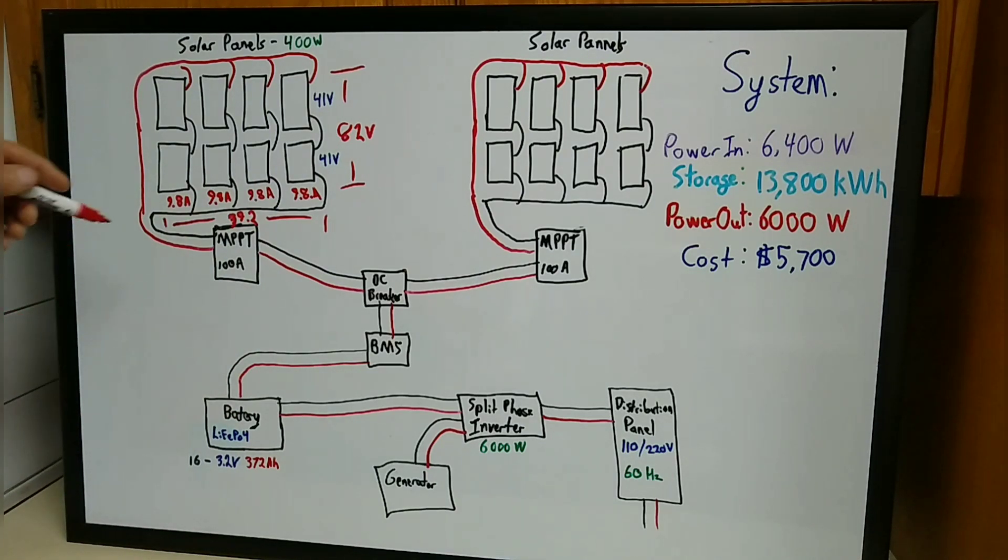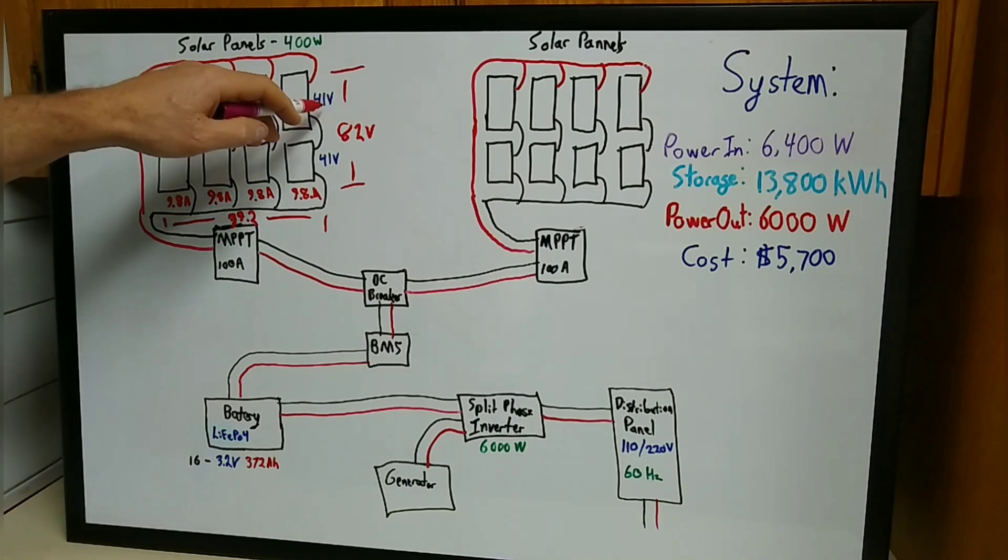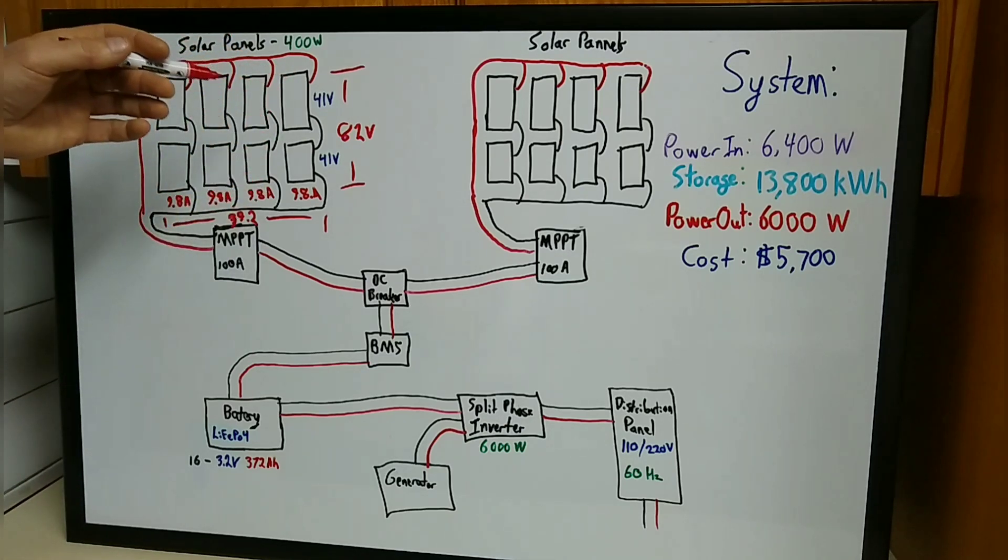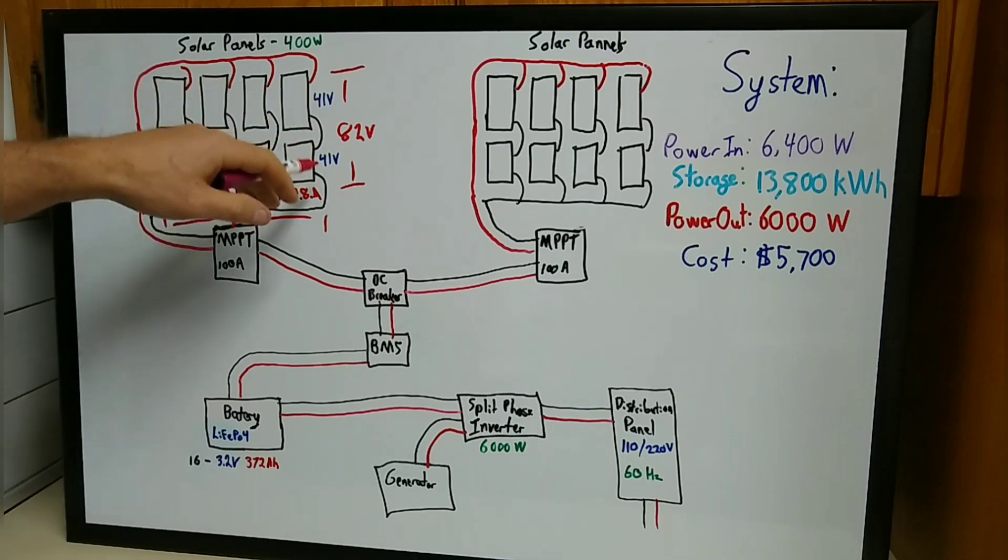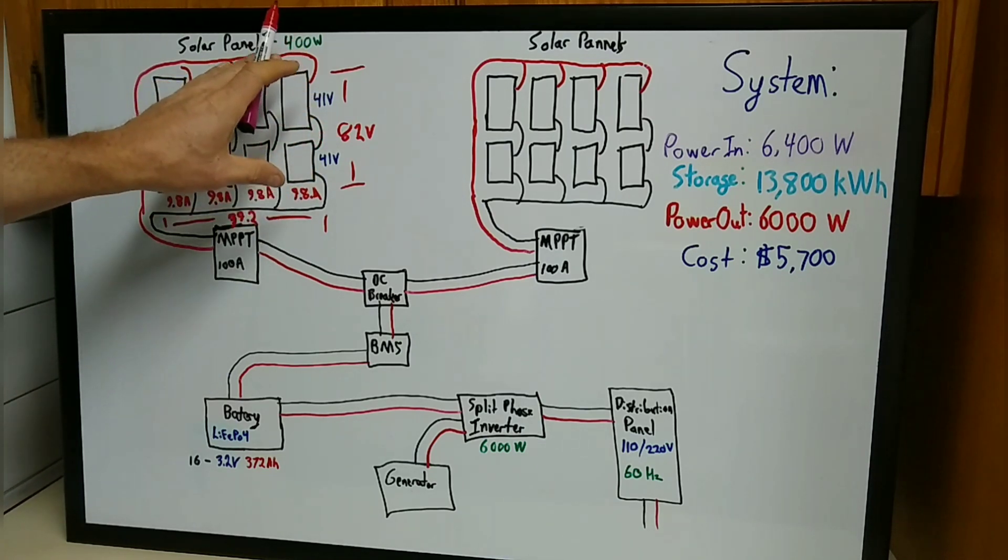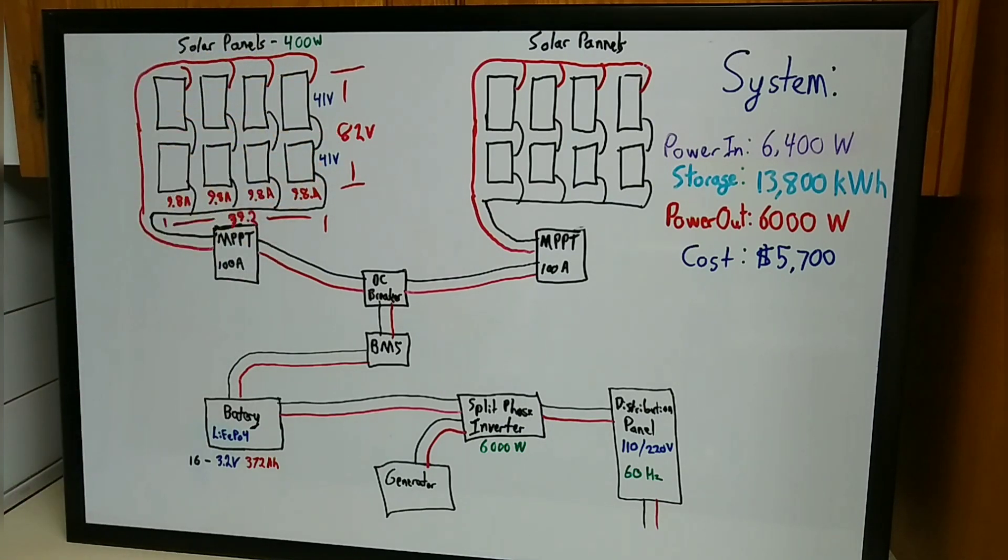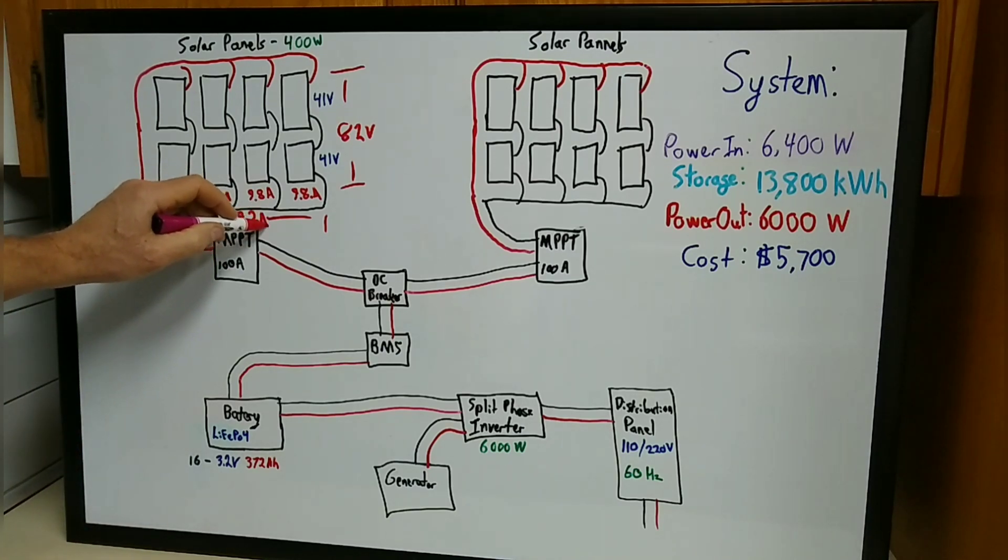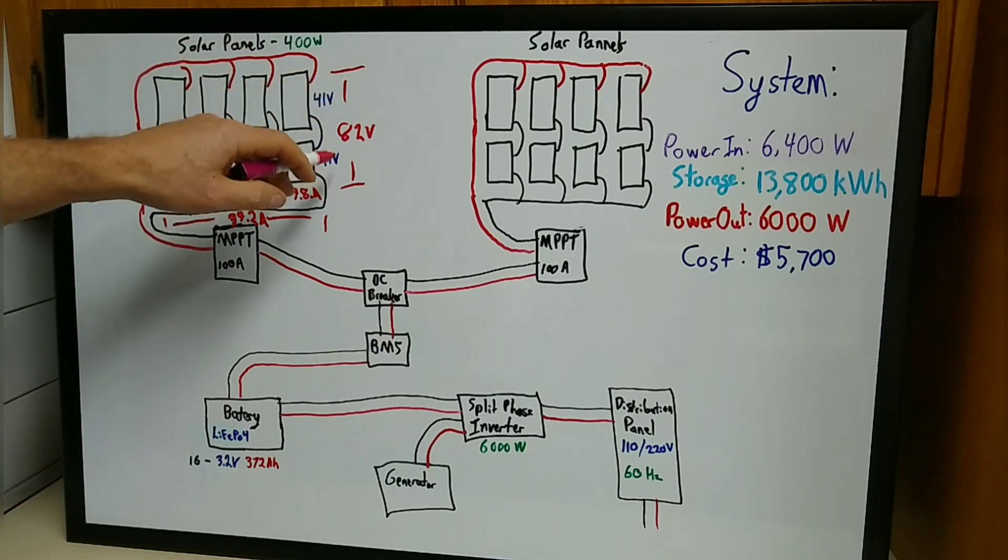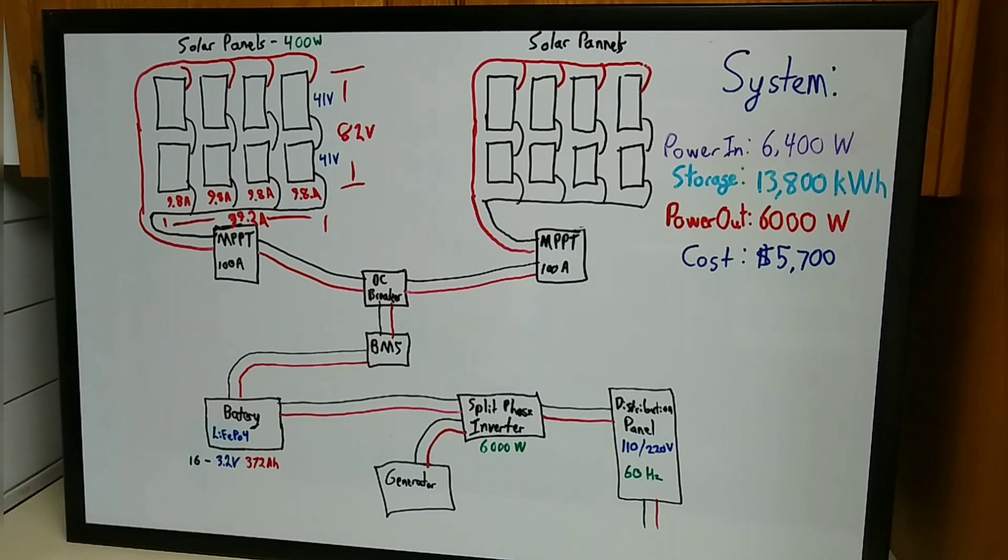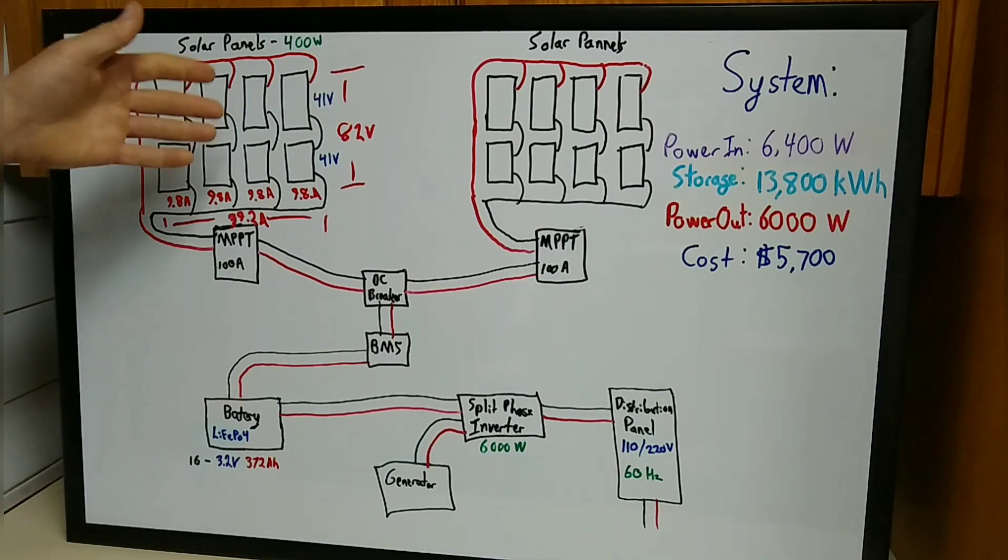My system—these MPPT controllers I bought have a maximum input voltage of 150 volts, so I had to configure it so we never exceeded that. The 41 volts is the nominal voltage; it can go much higher depending on conditions, outdoor temperature, and a lot of factors. This is 82 and could go considerably higher, so I didn't feel good about putting any more than two in series to keep it well under that 150 maximum voltage. In four parallel, we're only at 39.2 amps and we're good there too. You're going to take your voltage and amperage inputs that your MPPT is capable of and use that to figure out how to configure your solar panel array.